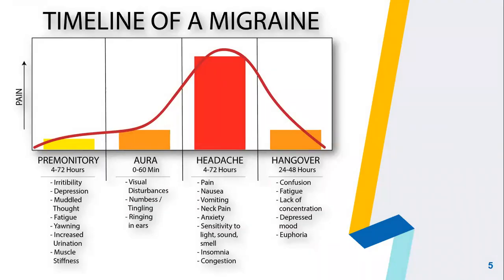Now let's discuss the timeline of a migraine. The migraine occurs in four phases: premonitory phase, aura phase, headache, and the last stage called hangover. About 60% of people who experience migraines with aura report premonitory symptoms that occur hours to days before the headache onset.